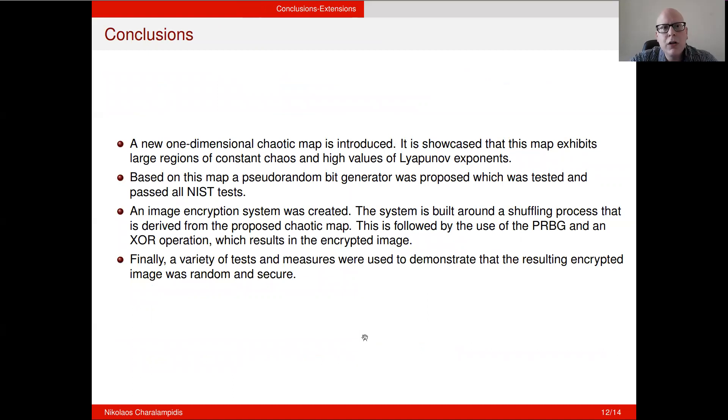To the conclusions, a new one-dimensional chaotic map was introduced, and it was showcased that this map exhibits large regions of constant chaos and high values of Lyapunov exponents. Based on this map, a random bit generator was proposed, which was tested and passed all the NIST tests. An image encryption system was created, and the system is built around a shuffling process that is derived from the proposed chaotic map, and this is followed by the use of the PRPG and an XOR operation, which results in the encrypted image. Finally, a variety of tests and measures were used to demonstrate that the resulting encrypted image was random and secure.